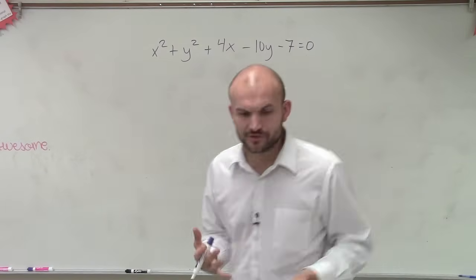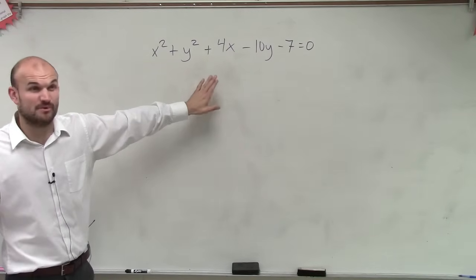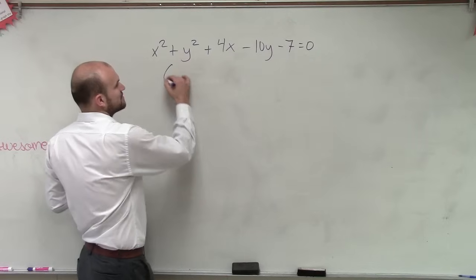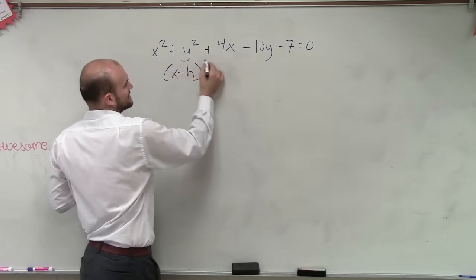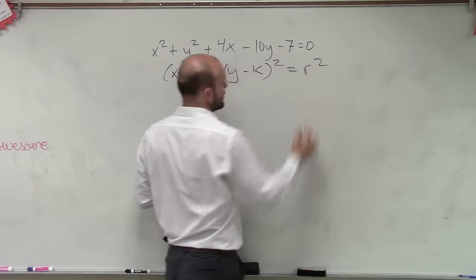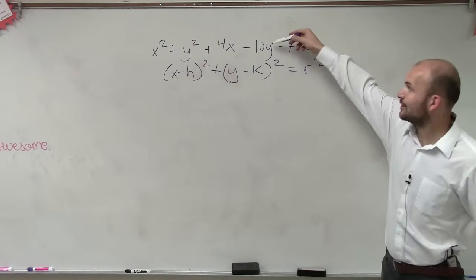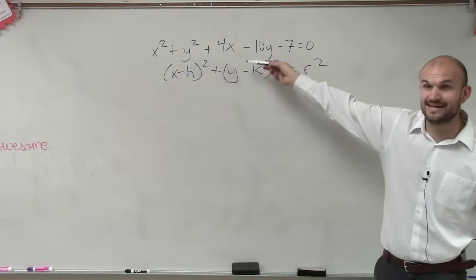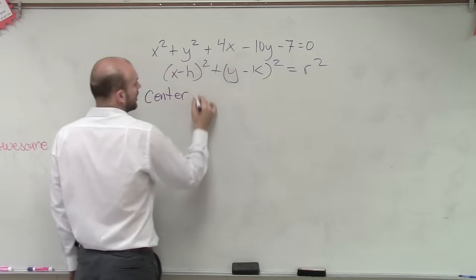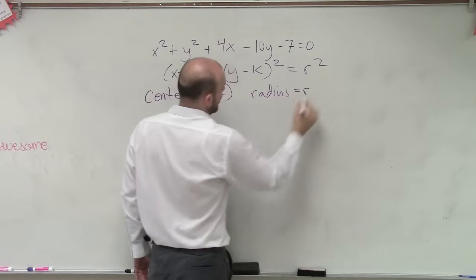So what we're going to do for this problem is we need to first determine if it's in our standard form of our equation of a circle. Remember, standard form of equation of a circle looks like this: x minus h squared plus y minus k squared equals r squared. Does this look anything like that? Because once it's like this, it's pretty easy. We know that the center of the circle is h comma k, and the radius is equal to r.